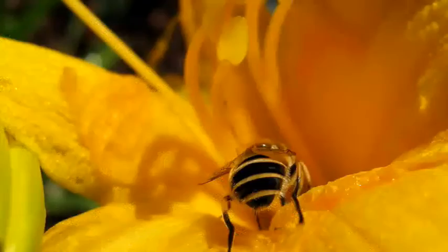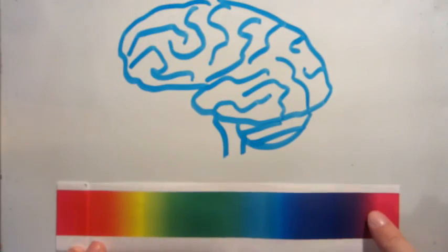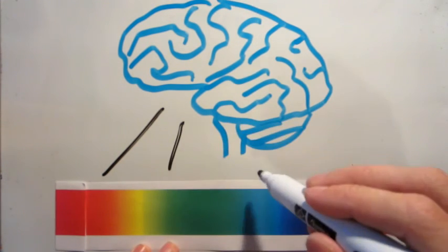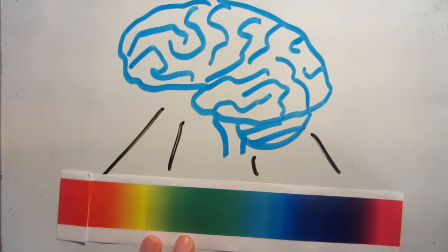Humans can distinguish about a million different colors. This scale represents every color you can see. Each part of it looks slightly different to you, right? So somewhere in your brain, each color must have a unique representation. How might your brain be accomplishing this?